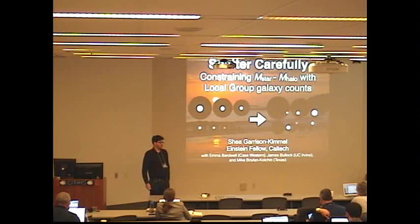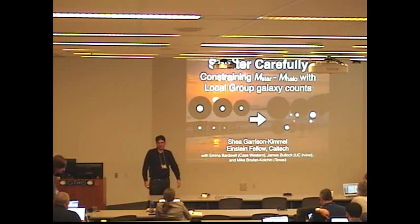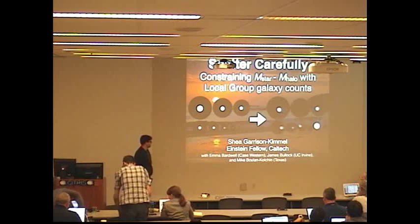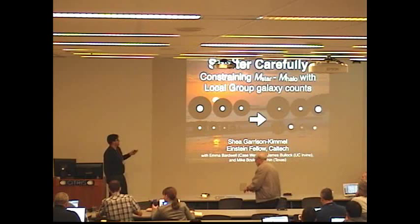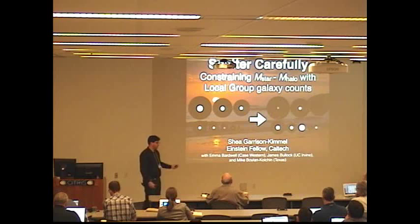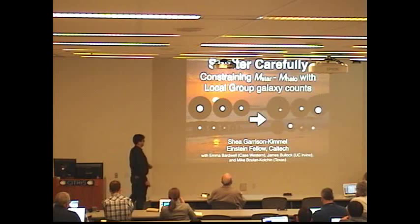Alright, so thank you to the organizers and thank you everyone for sticking around to the end of the conference. I know we're all getting a little tired at this point, or maybe that's just because I stayed out too late last night. Today I want to tell you about some work I've been doing trying to constrain the M-star and M-halo relation using local group galaxy counts. This is work we started with Emma Barbwell, an undergraduate at Case Western, and James and Mike Bullock have been involved as well.